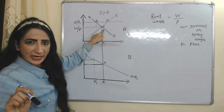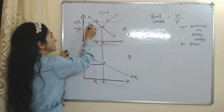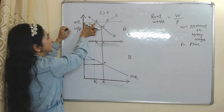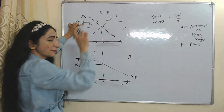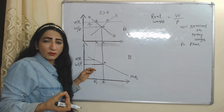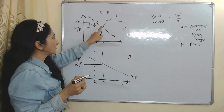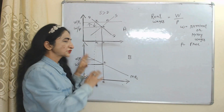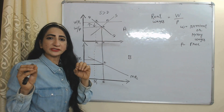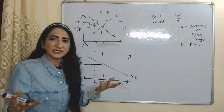Suppose our initial equilibrium point is E, where labor demand is equal to labor supply — meaning initially we have full employment equilibrium. Now suppose the real wage rate increases. As the real wage rate increases, labor supply exceeds labor demand. You can see labor supply is more than labor demand, meaning more people want to work but we don't have enough jobs. As a result, the real wage rate will fall and eventually we will achieve the full employment point E — without any government intervention.